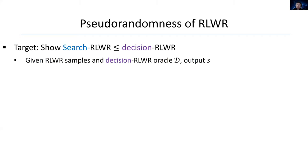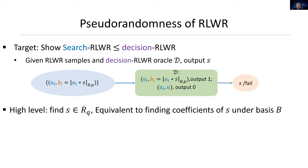Let me show the pseudorandomness of ring LWR. The target is to show the reduction from search ring LWR to decision ring LWR. Namely, given ring LWR samples and decision ring LWR oracle D, we wish to output S. Oracle D is defined to output 1 if the input pair is ring LWR sample and output 0 if the pair is random. At high level, finding S is equivalent to finding coefficients of S under basis B.